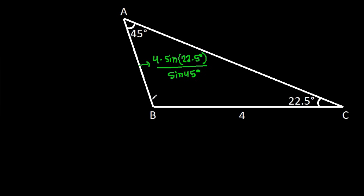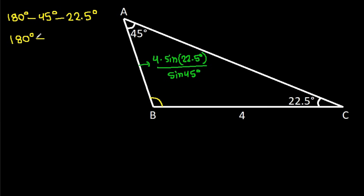Now this angle B will be 180 minus 45 minus 22.5, which is 180 minus 67.5, that will be 112.5 degrees.